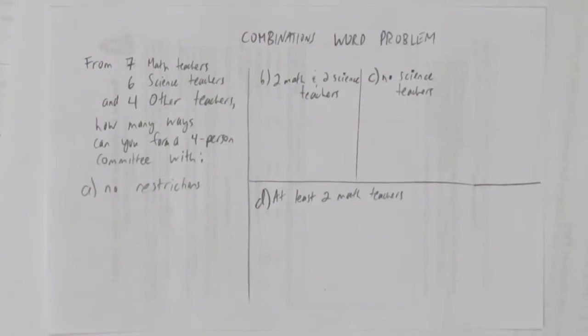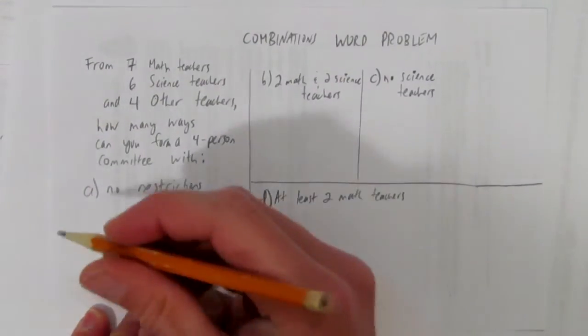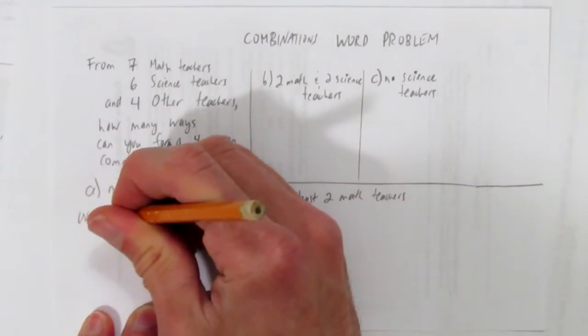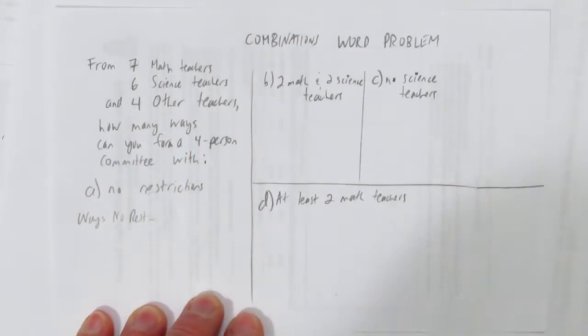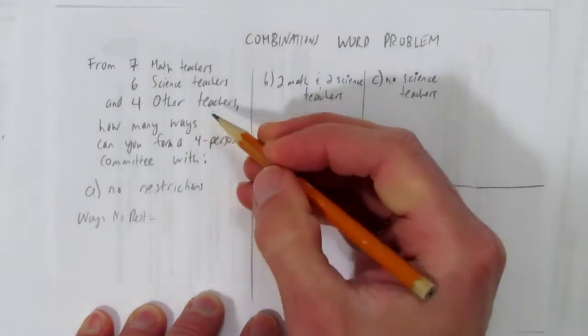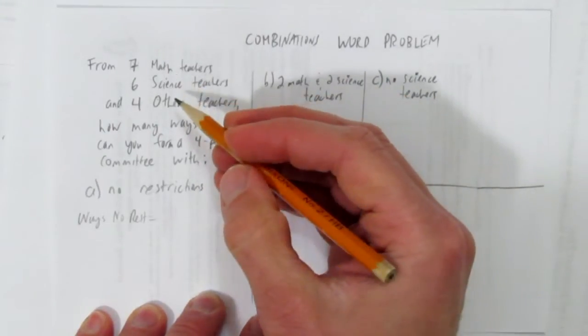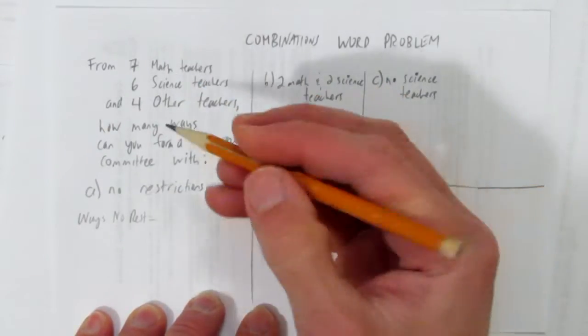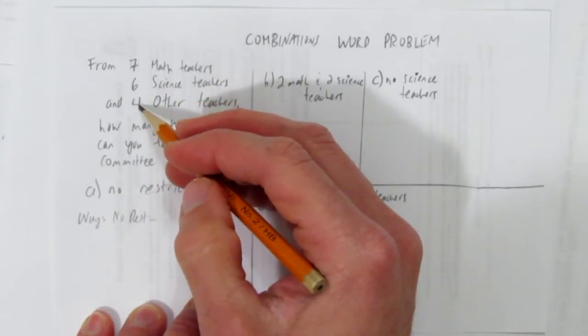In how many ways could you form a four person committee if there were no restrictions? Well, with no restrictions all the teachers are equal, they're just regular people with no distinctions. We just add them up: seven plus six is thirteen, plus four is seventeen.